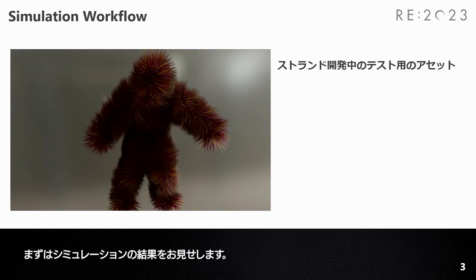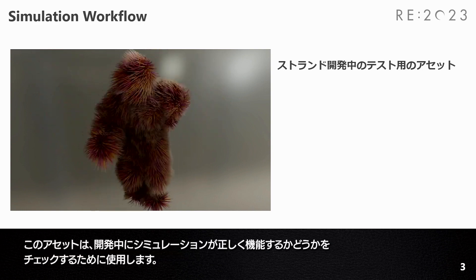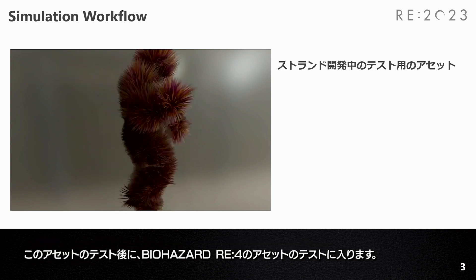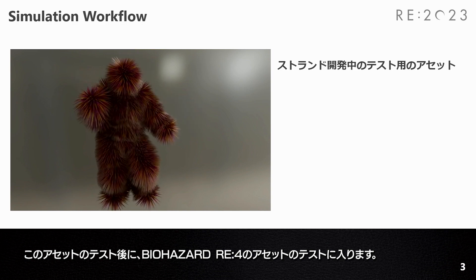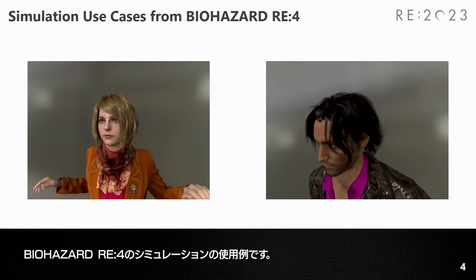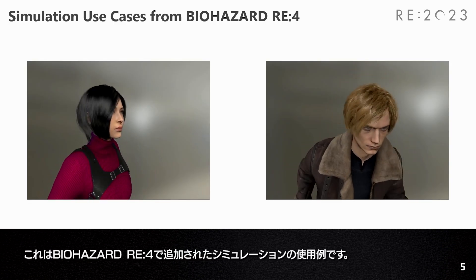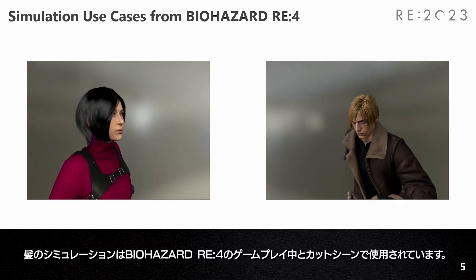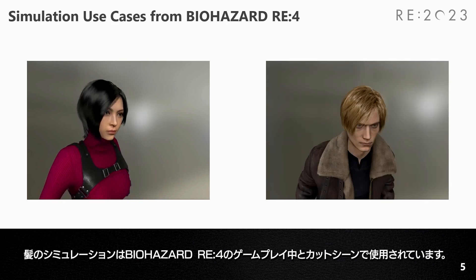First, I will show you some simulation results. This asset is used for checking if the simulation works correctly during development. After testing this asset and making sure everything works fine, we start to test the Resident Evil 4 assets. These are the simulation use cases from Resident Evil 4, including additional ones. If strand hair configuration is on, hair simulation is used during Resident Evil 4's gameplay and in cutscenes by default.